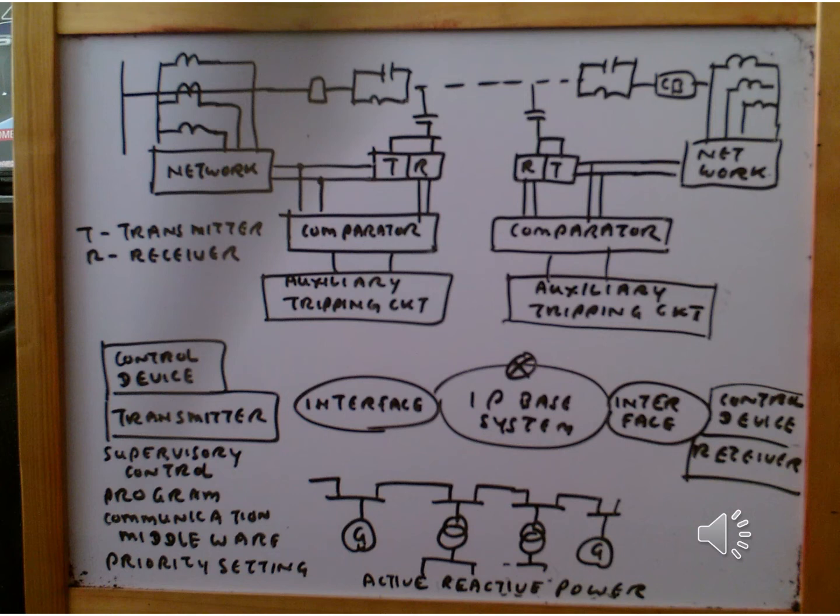In the second part, this is the power control driver. We have NWAC, which is the interface with the current transformer, and then you can see the comparator, activator, tripping circuit, and transmitter and receiver. Those transmitter and receiver bring you the transmitting and receiving signals. They make the combination appropriate so that the tripping circuit operates. Those transmissions are handled by the IP-based system or internet protocol-based system.